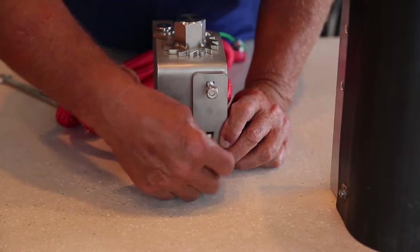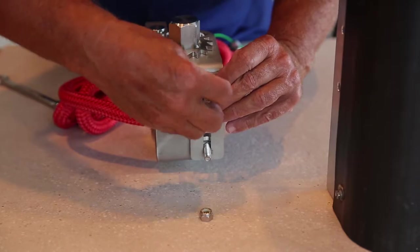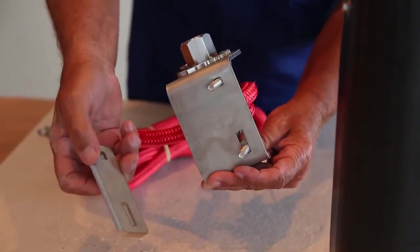Installation of the Ratchet-Tite is simple. Each Ratchet-Tite comes with two stainless steel bolts, nylock nuts, and a spacer to be placed behind the unit.